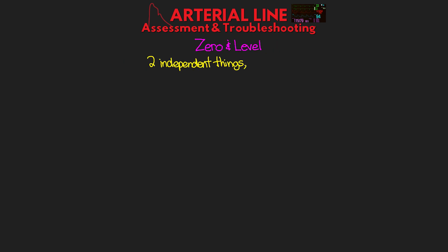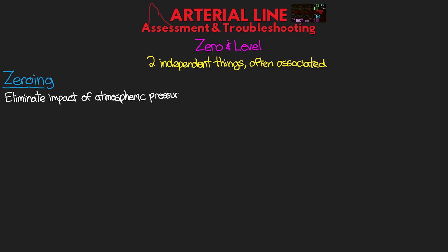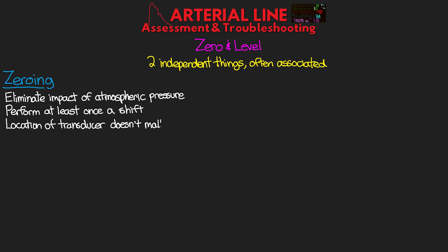Zeroing and leveling are two independent things but are often associated together and should typically be performed together at the beginning of the shift. Zeroing is the act of eliminating the impact of atmospheric pressure on our arterial pressure reading. Theoretically this only needs to be done once, but good practice is to perform it at least once per shift.